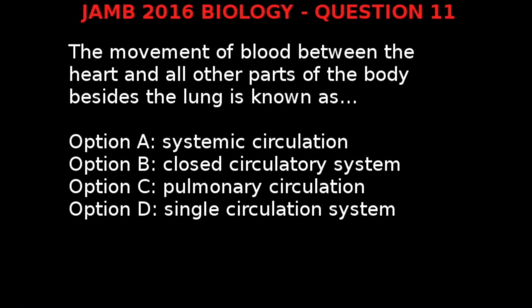JAM 2016 Biology question 11. The movement of blood between the heart and all other parts of the body besides the lung is known as: option A, systemic circulation; option B, closed circulatory system; option C, pulmonary circulation; option D, single circulation system.